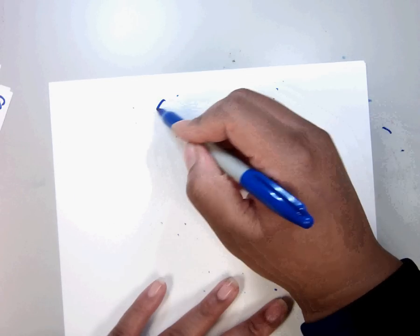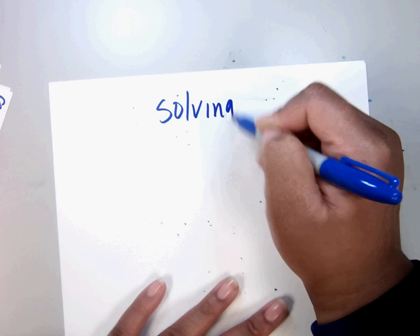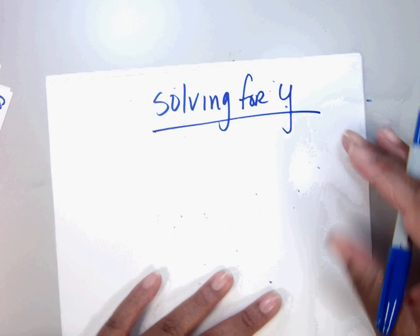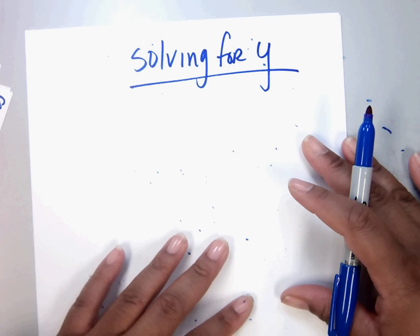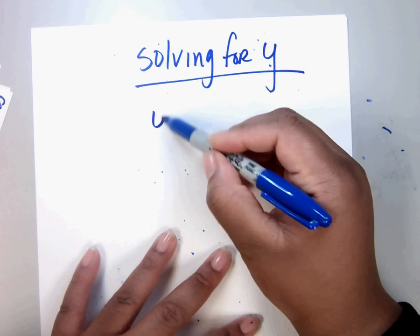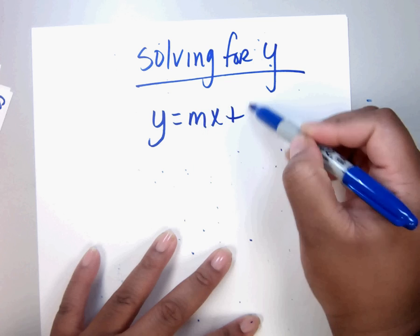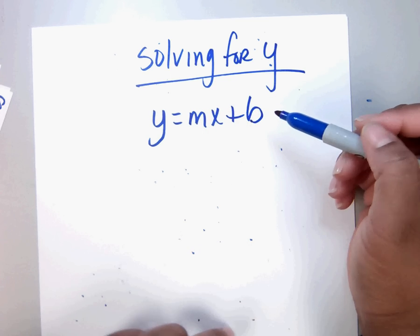Let's do some solving for y practice. When you're solving for y, you want to get the equation in y equals mx plus b form — slope-intercept form.